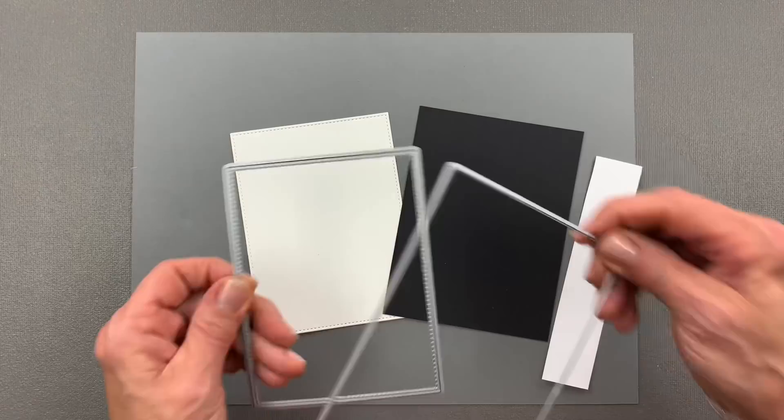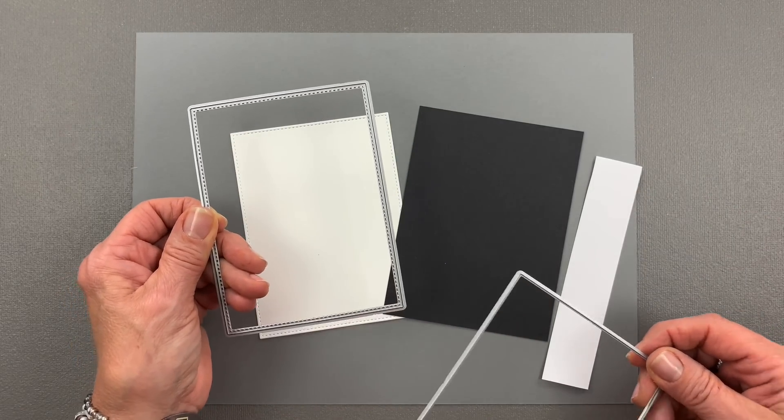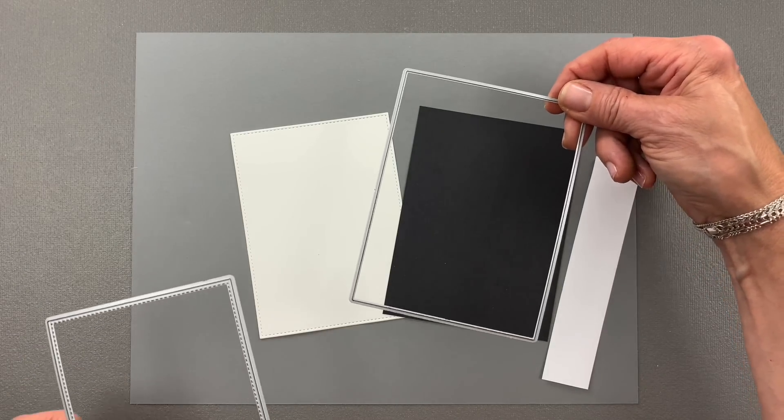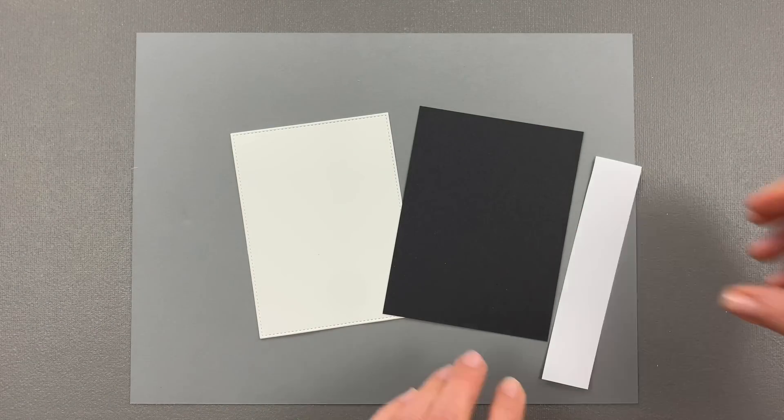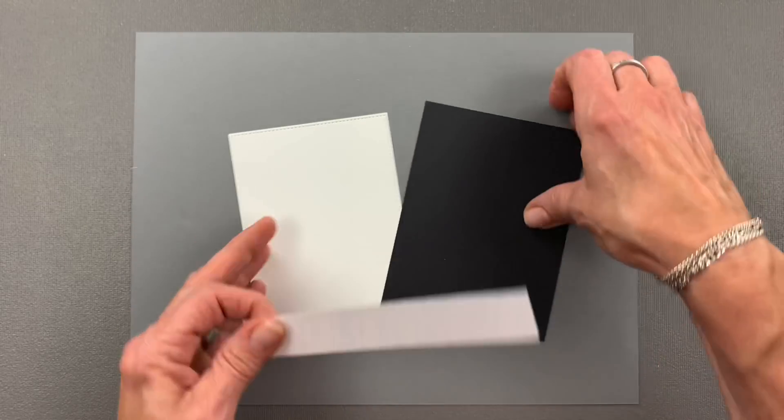I started out cutting a white piece of cardstock with the stitched die from Master Layouts 2 and a black piece of cardstock from the plain die from Master Layouts 2. I also cut a one-inch wide strip of Masking Magic.